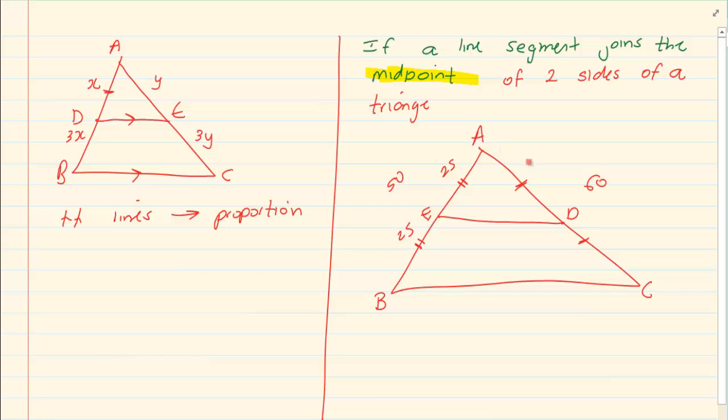Exactly in the middle. If this side was 60 then it would have cut it into 30 and 30. So what I am saying is it is cutting it in the midpoint. It is not telling me that the lengths are equal. So watch your language.